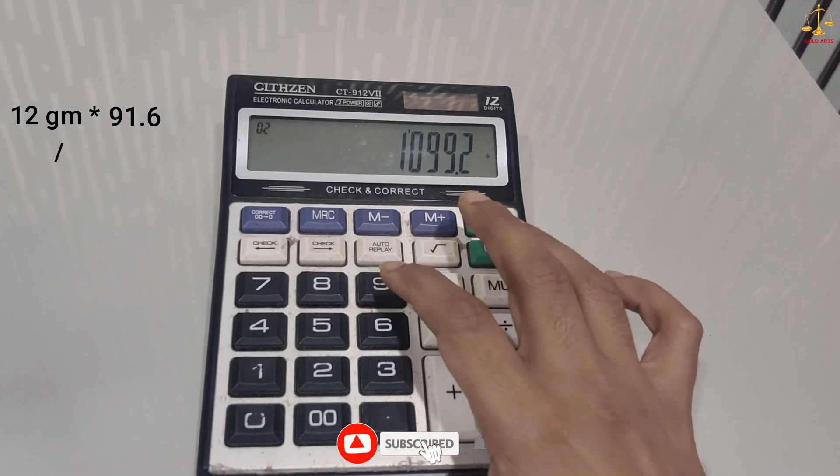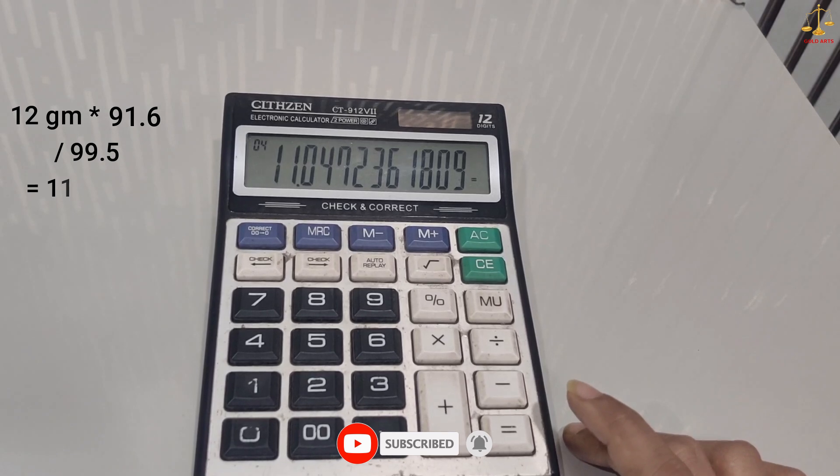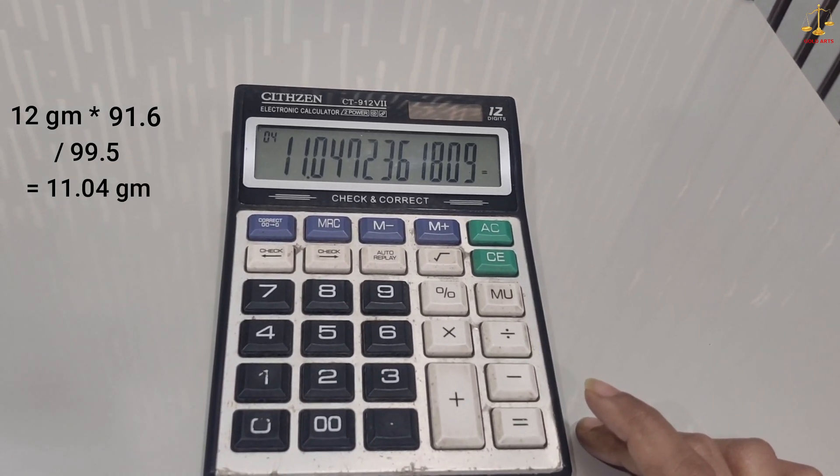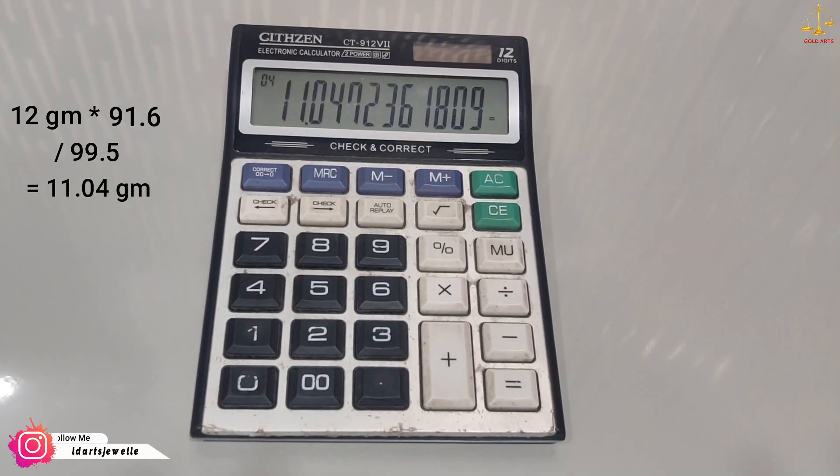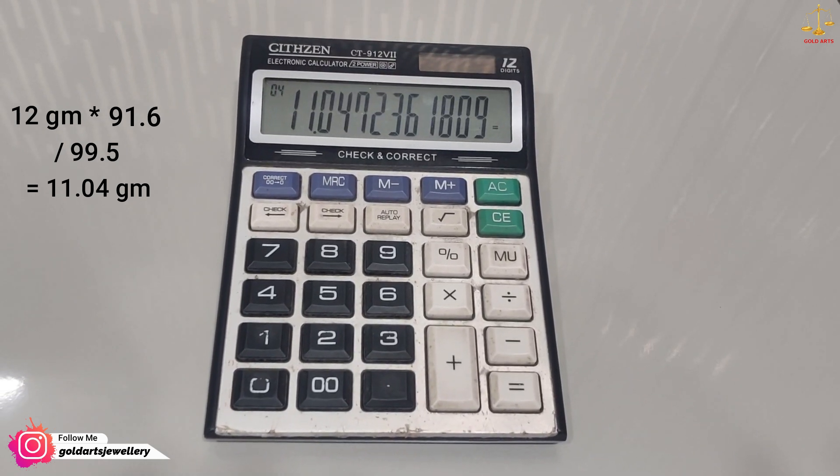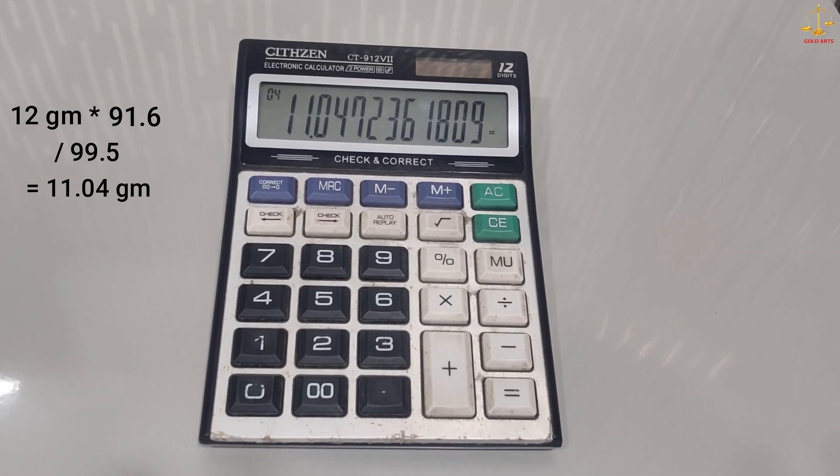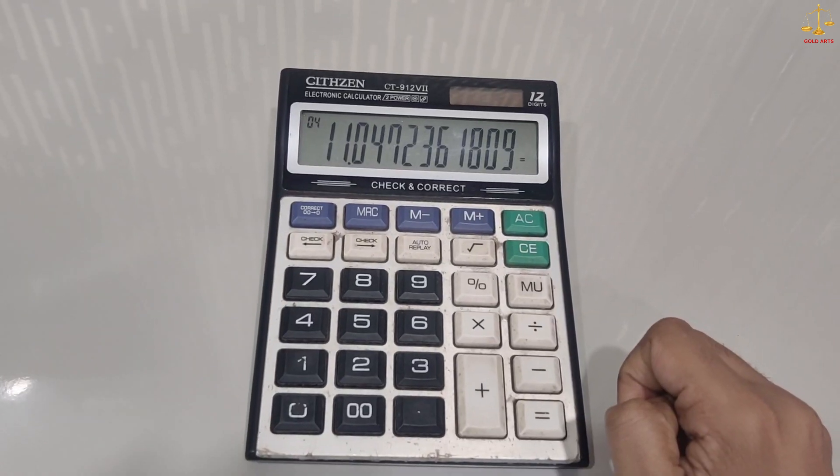This equals 11.04 grams. This means that if you are buying 12 grams of 22 karat jewelry, then for exchanging it you will need 11.04 grams of 99.5% purity gold coins.